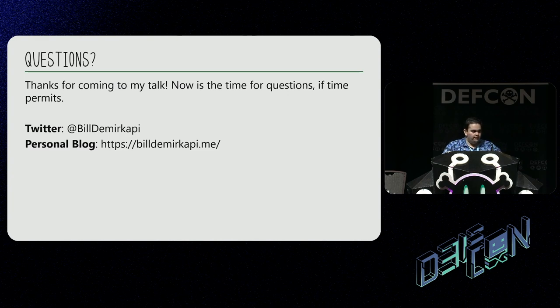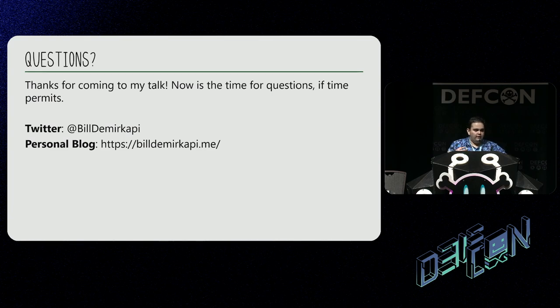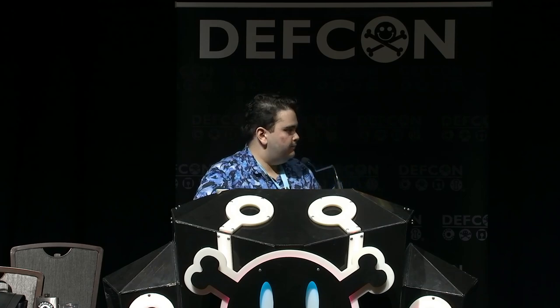The question was: would certificate pinning help in this context? It can help in the sense that if there's only a certain subset of trusted authorities that can issue certificates your application accepts, it becomes much harder for an attacker to generate a certificate, like an SSL certificate, under that authority. So if you're using your own CA, that can definitely protect it — as long as an attacker can't generate a certificate under that CA. But if it's something like DigiCert or another widely accessible trusted authority that an attacker could generate certificates under, then it doesn't help much in that context. If there are any other questions, feel free to come up to the stage.